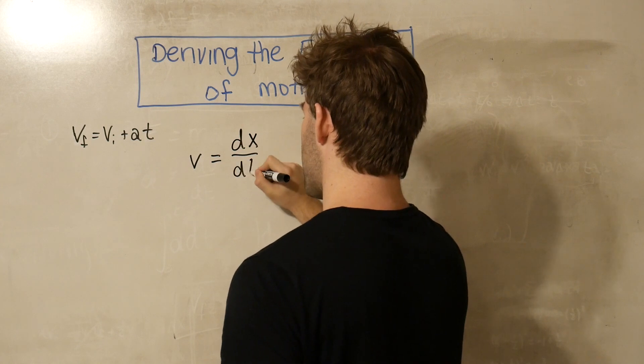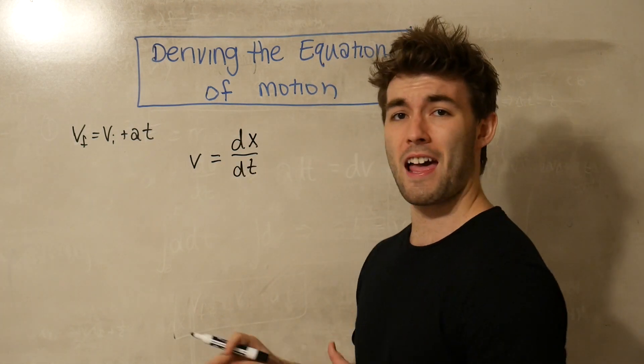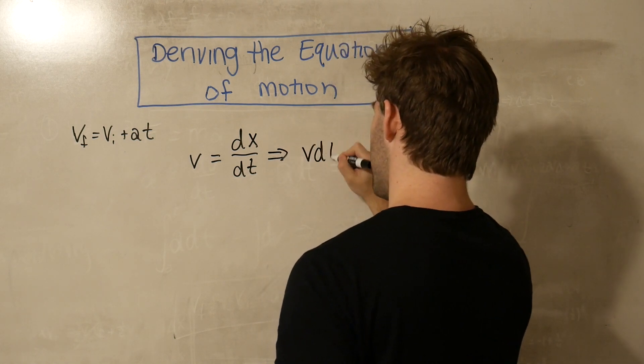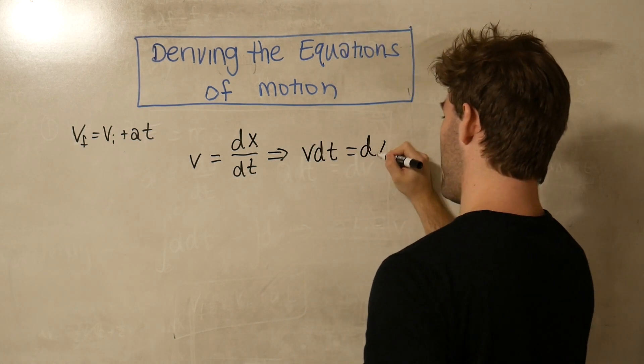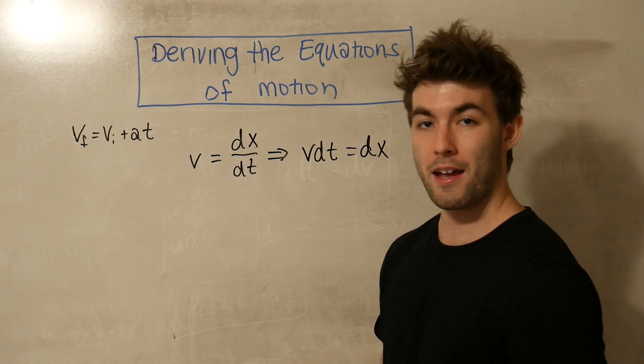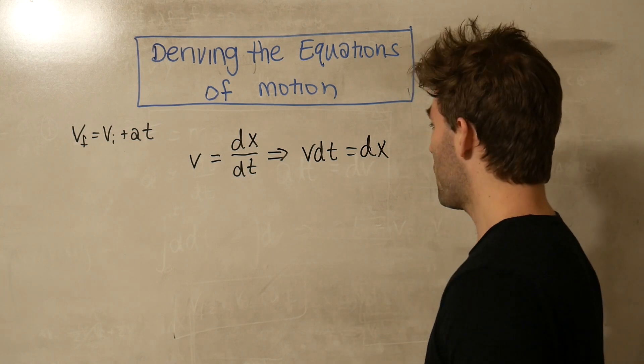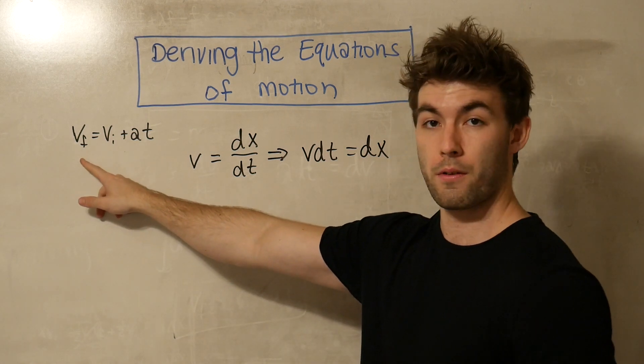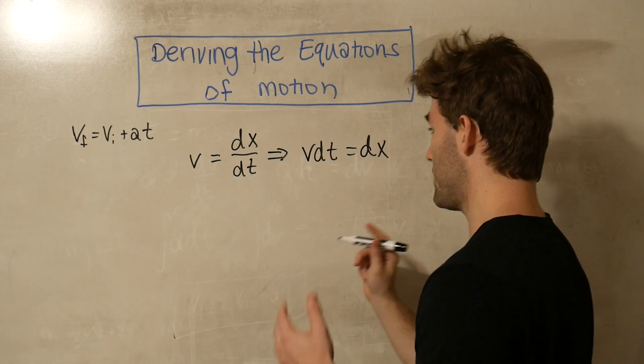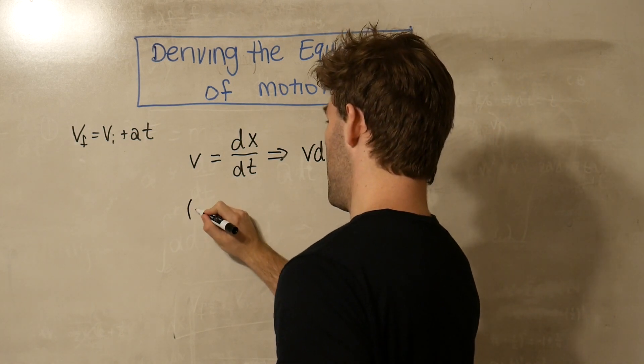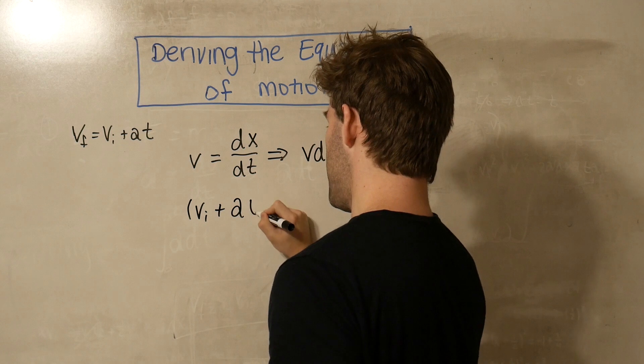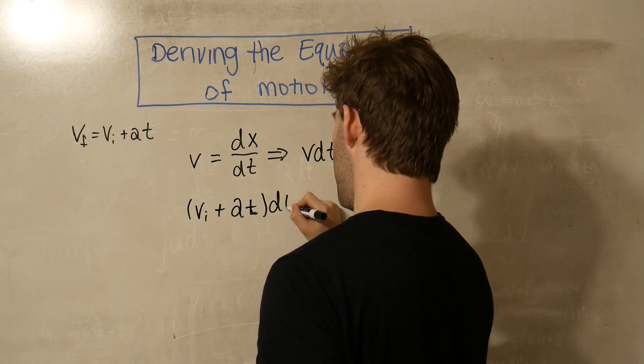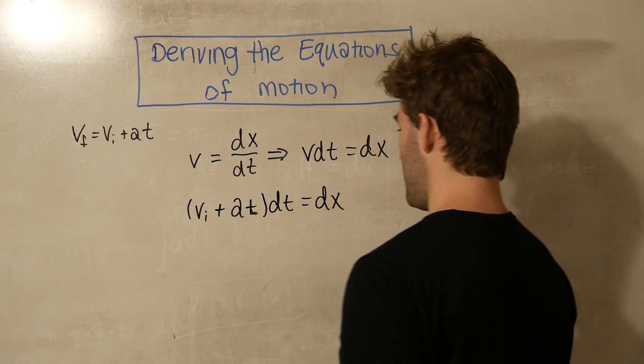I'm going to do the exact same thing where we multiply by dt, we get v dt is equal to some differential change in position. Now, instead of going ahead and integrating right away, what we're going to do is we're going to substitute this v in for the vf that we used for equation one. So if we do that, then we get vi plus at dt is equal to some differential change in position.